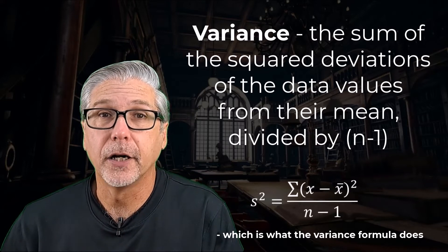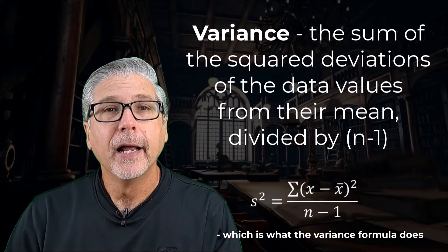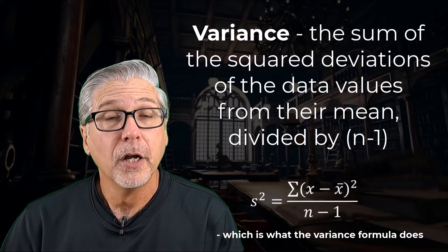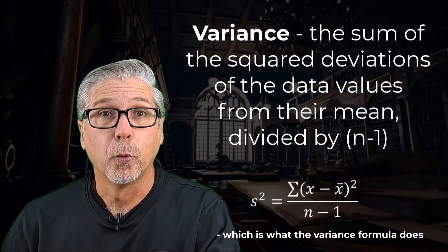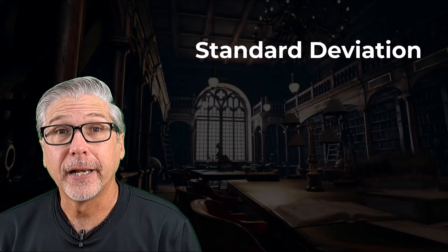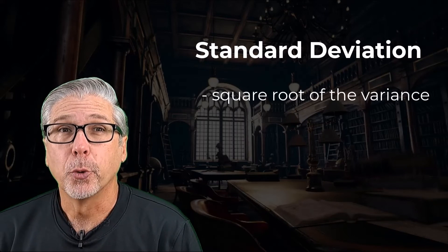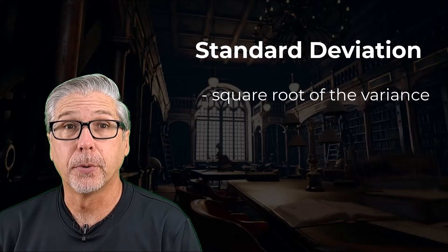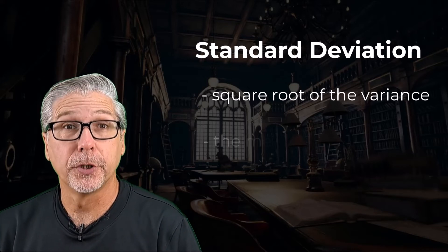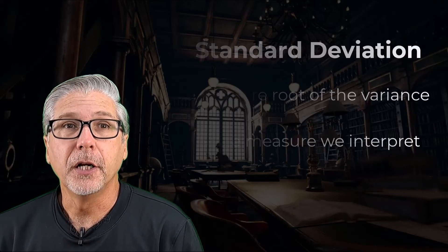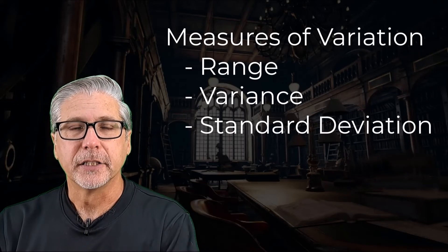Now some of you were able to follow that, and that's great. And others are like, what just happened? That's okay too — no worries. If you followed it, that'll help. If you didn't, it's probably not going to hurt that much, because the variance is just used for calculations. That brings us to our third measure of variation. The standard deviation is just the square root of the variance, so we can really think of the variance and the standard deviation as being a team. I like to think of the variance as the calculation part and the standard deviation as the interpretation part. Formally, the three measures of variation are: the range, the variance, and the standard deviation.